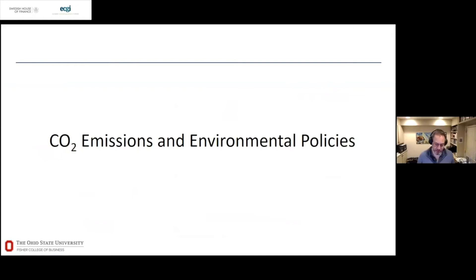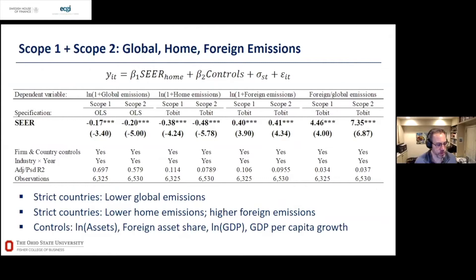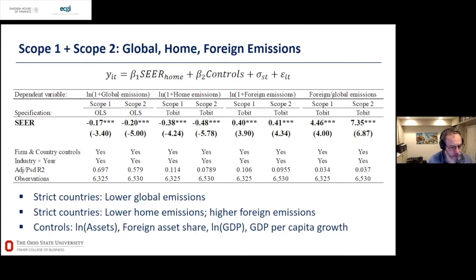Looking at our first set of results — basically the relations shown in the chart — we examine how much firms emit as a function of their home country environmental regulation score. We find that firms headquartered in countries with strict environmental policy emit about 20% less overall, for both scope 1 and scope 2.